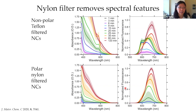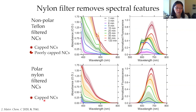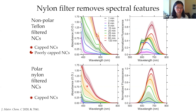Our hypothesis is that Teflon, being nonpolar, doesn't stick to anything, so nanocrystals of any variety — well-capped or poorly capped — can make it through. A polar nylon filter, however, we think only lets through well-capped nanocrystals with a shell of organic ligand. Poorly capped nanocrystals still have polar surfaces exposed and probably adhere to the filter. So we think these early features come from poorly capped nanocrystals, and it's only at the end that we see well-capped nanocrystals that can survive the nylon filter.